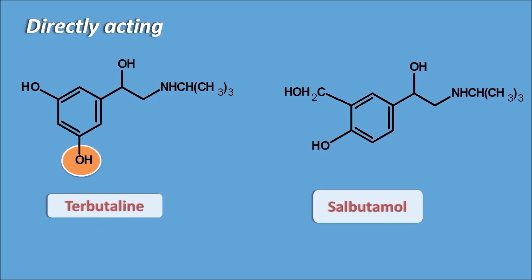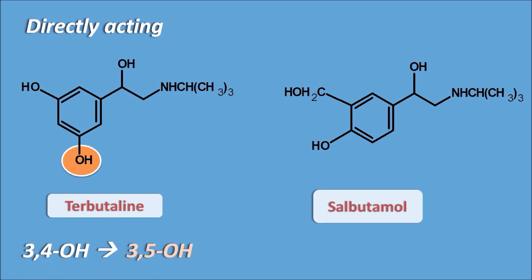Other directly acting drugs are terbutaline and salbutamol. In terbutaline, the OH group is not present at the fourth position but instead at the fifth position, converting the 3,4-dihydroxy arrangement to 3,5-dihydroxy. In salbutamol, the 3-hydroxy group is replaced with a 3-hydroxymethyl group. These structural modifications confer beta-2 selectivity on both drugs.